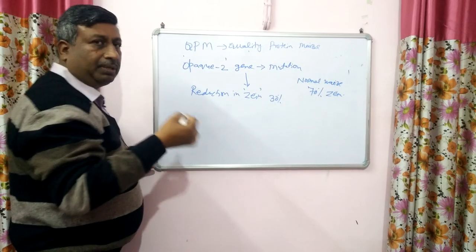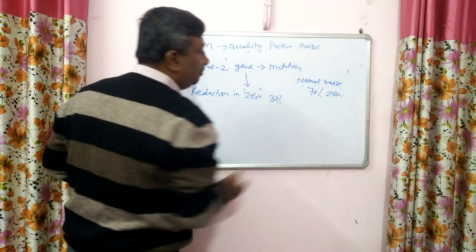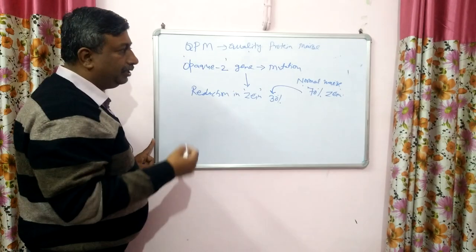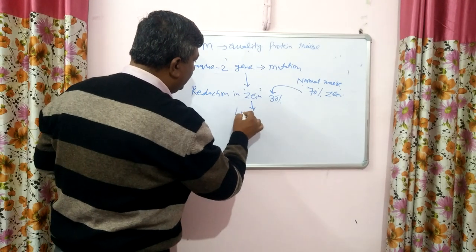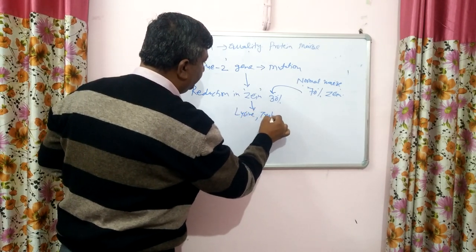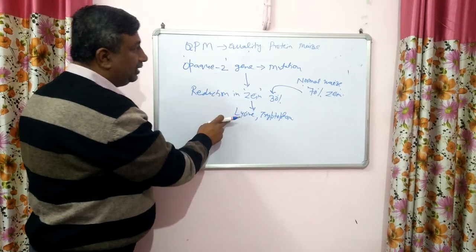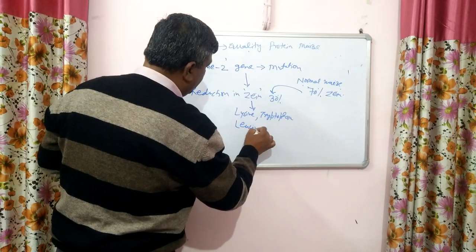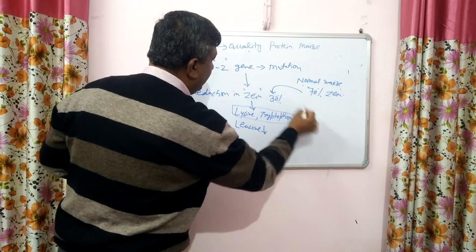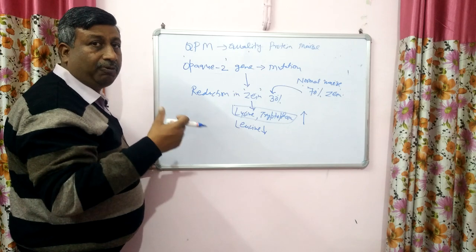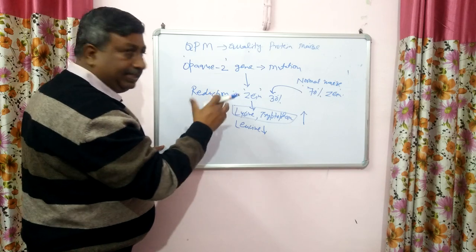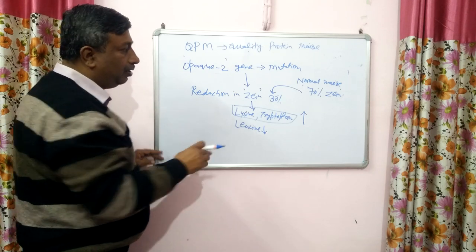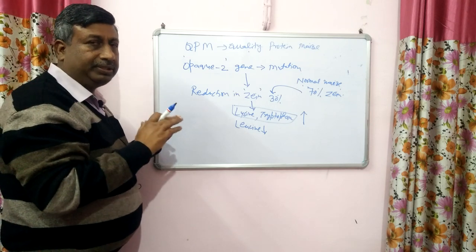In normal maize, about 70% of the maize protein is zein. Other fractions — albumin, globulin — are present in very low percentages. Because of the opaque-2 gene mutation, the zein content was reduced to about 30%. As a result, lysine and tryptophan content increased, and leucine content decreased. When tryptophan increased, the leucine-to-isoleucine ratio became balanced, tryptophan availability improved, niacin synthesis increased, pellagra disease was prevented, and the biological value of protein increased because all four essential amino acids were in balanced ratio.